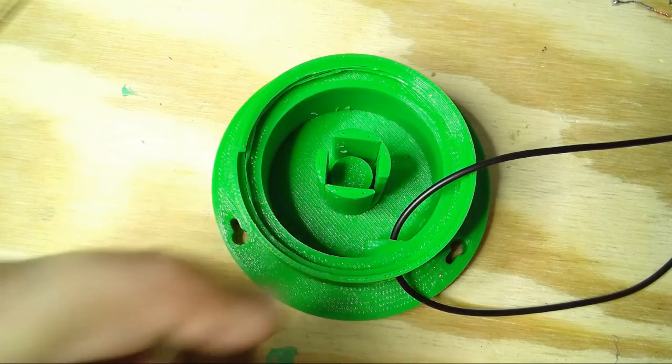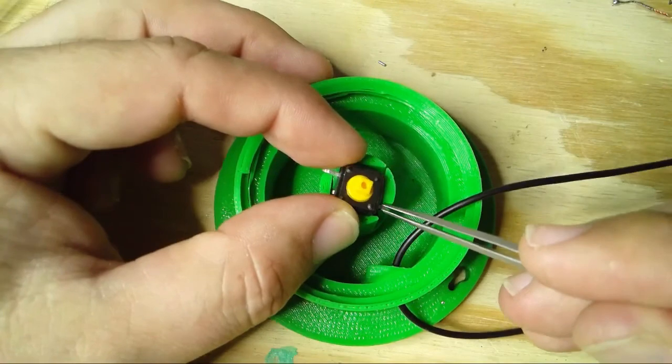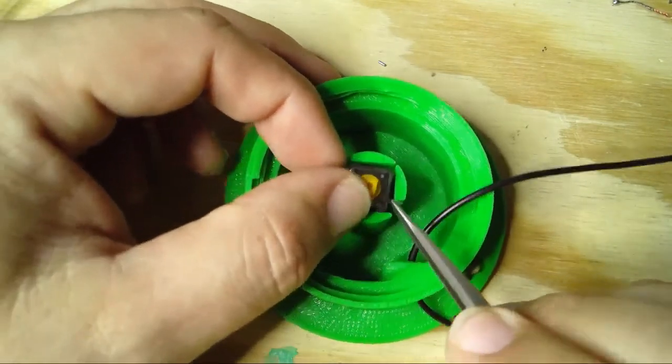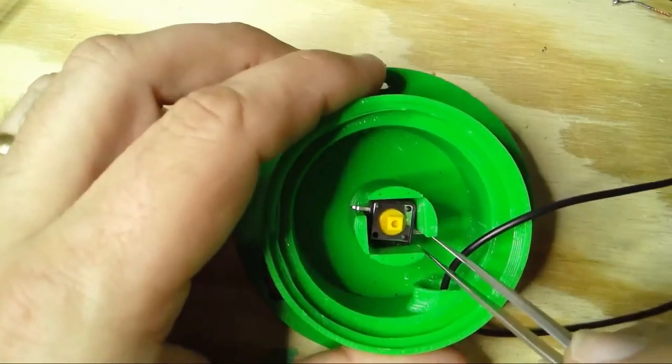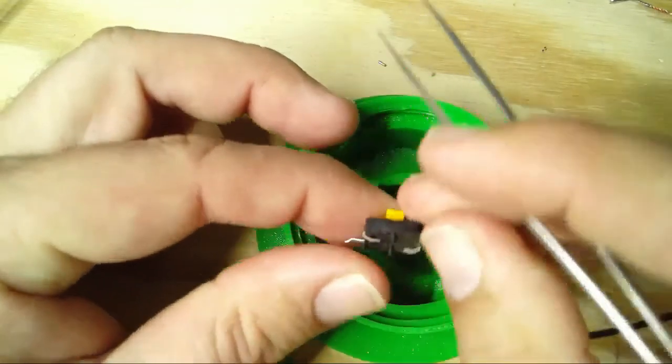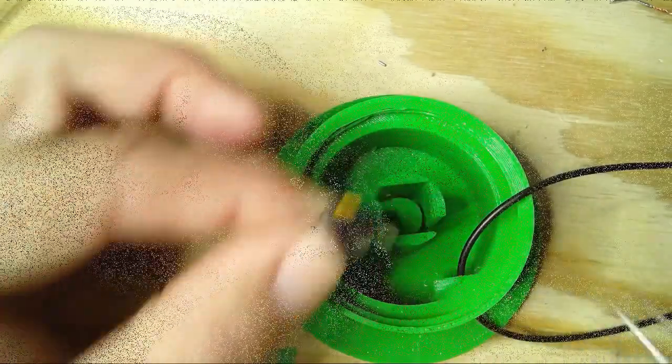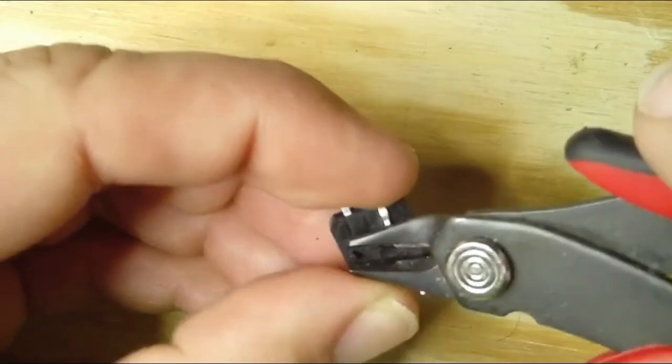Looking at the switch housing, the base, you'll see that this is the way that the switch will fit in. Basically just like that. So we need to have these two pins pulled out and the other two bent back. Here I'll use a pair of flush cut pliers to just cut off these little tabs.